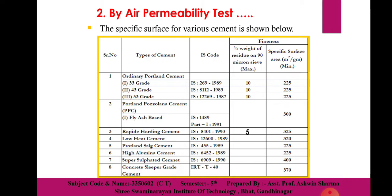The table has two columns: percentage weight of residue on 90-micron sieve, and specific surface area of 225 standard size. The second cement listed is Portland Pozzolana Cement (PPC). The first division is fly-ash based, under IS code 1489 Part 1, 1991.